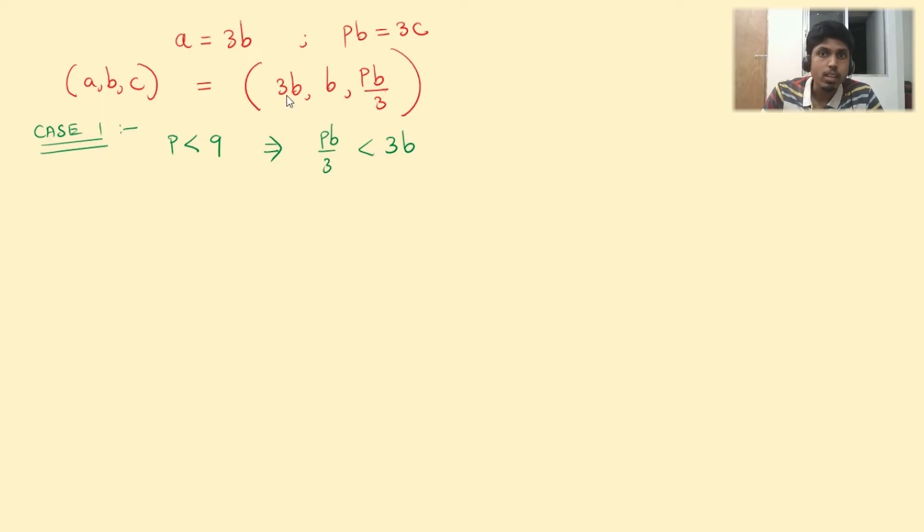So that means out of these three sides of the triangle 3b is the largest side. And the triangular inequality can be consolidated to just one condition. Largest side must be less than sum of the other two sides.